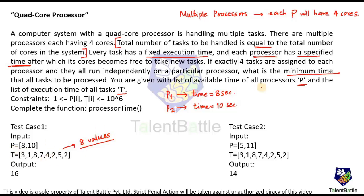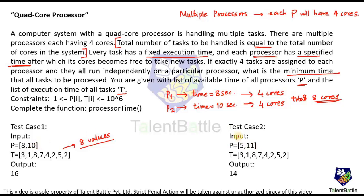Every processor is going to have 4 cores — so 4 cores for processor 1 and 4 cores for processor 2, making 8 cores total. The tasks are also 8, so every core is going to handle one particular task. The output, meaning the minimum time to complete all tasks, is already given as 60. Similarly in the second test case, the task time is the same but only the processor time is different: 5 seconds and 11 seconds. We have to utilize these two values to generate the minimum time for all tasks to be processed.